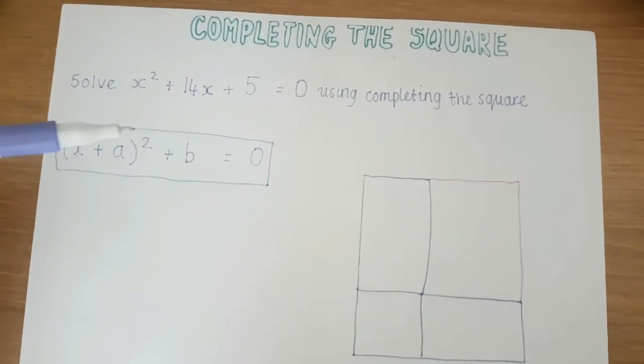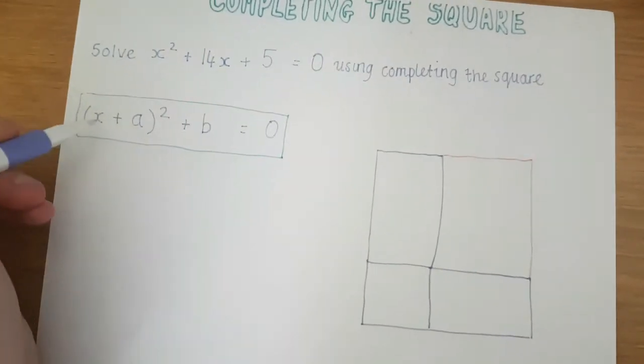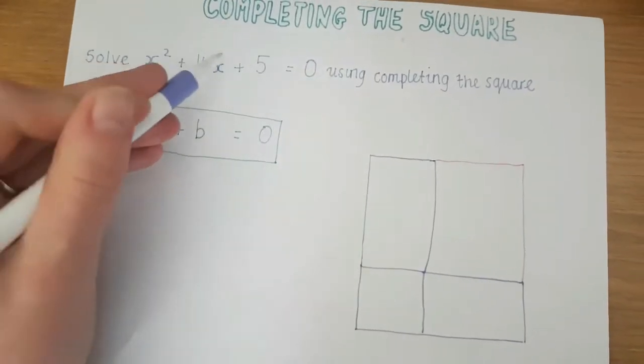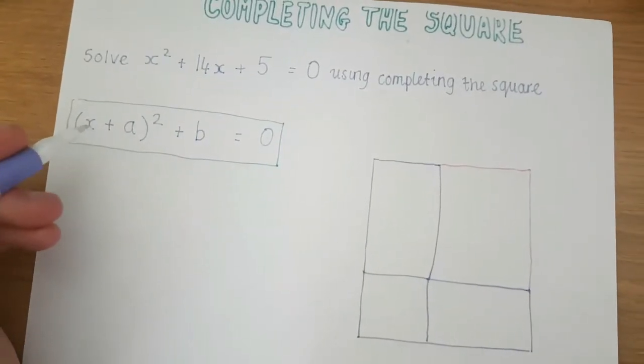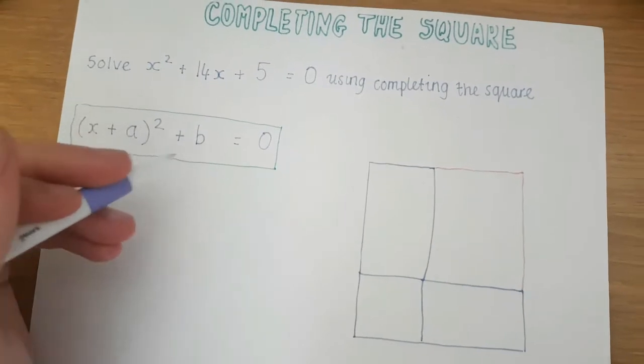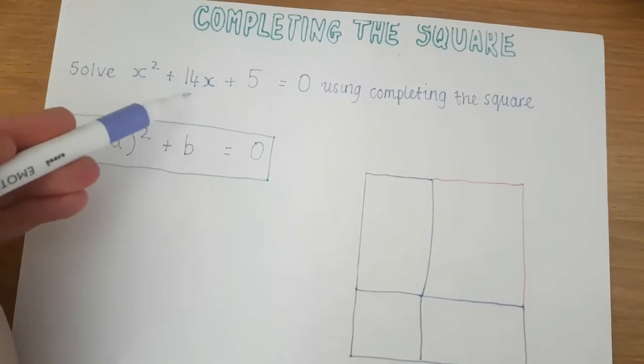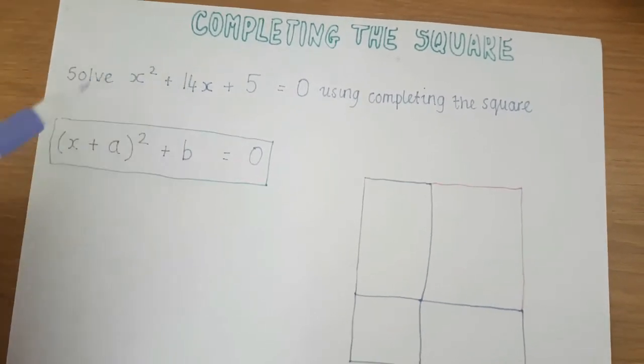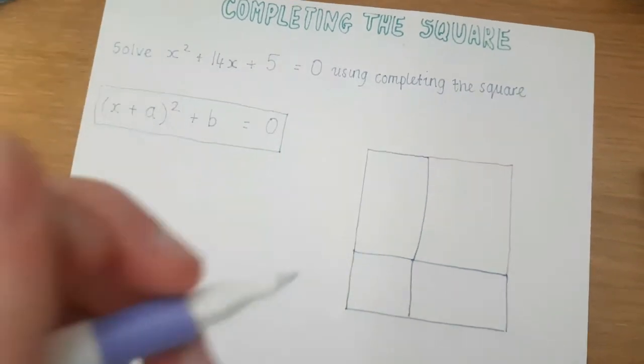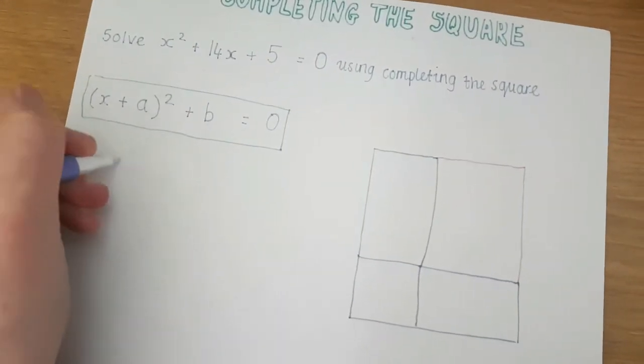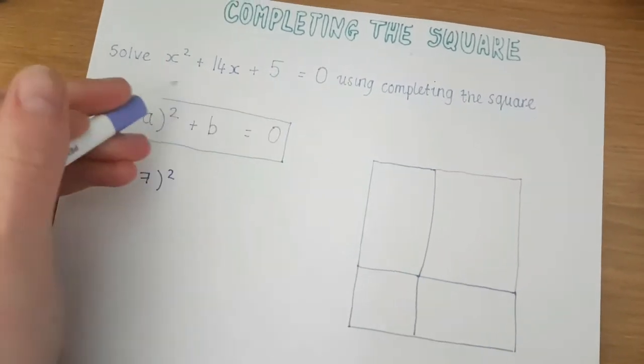So this may jog a few vague memories but what we want to do is we want to make this part here equal to this part here. So we want x² + 14x to be equal to (x + a)² + b. The way we do this is we can only get this 14x if we halve this coefficient and put it here because obviously if we have +7x +7x we're going to get 14x. So I'm going to halve that coefficient and say (x + 7)² because I've halved that there.